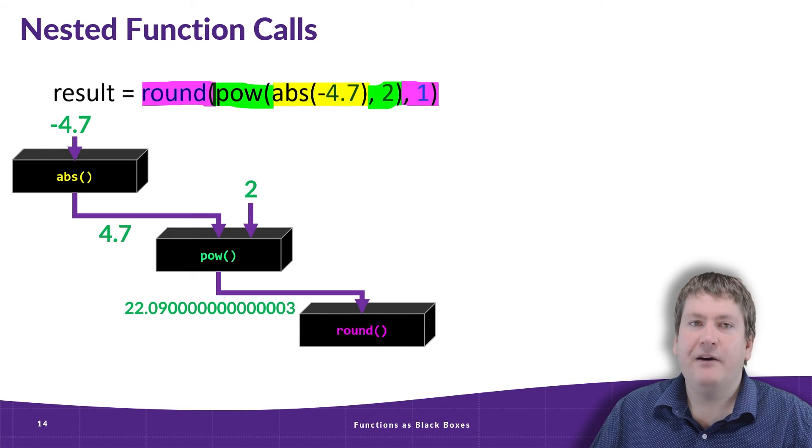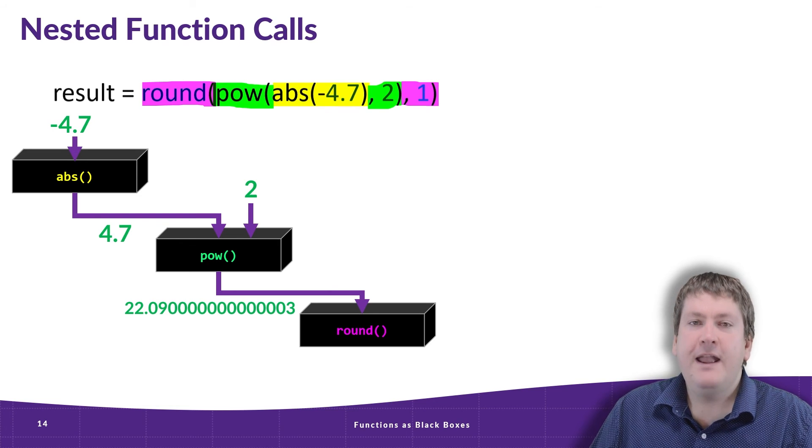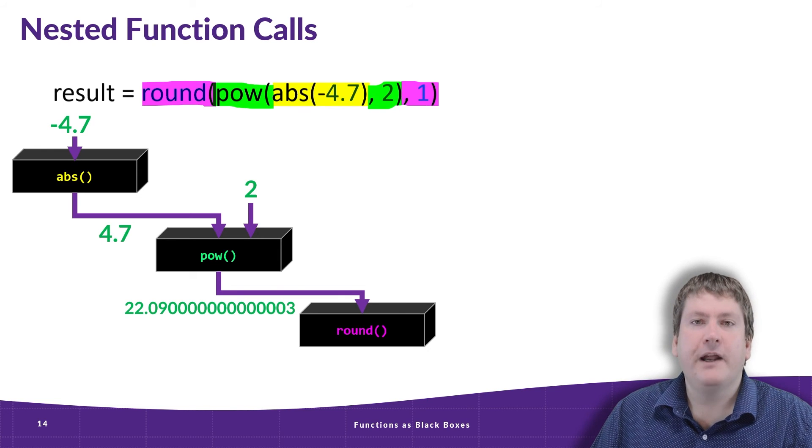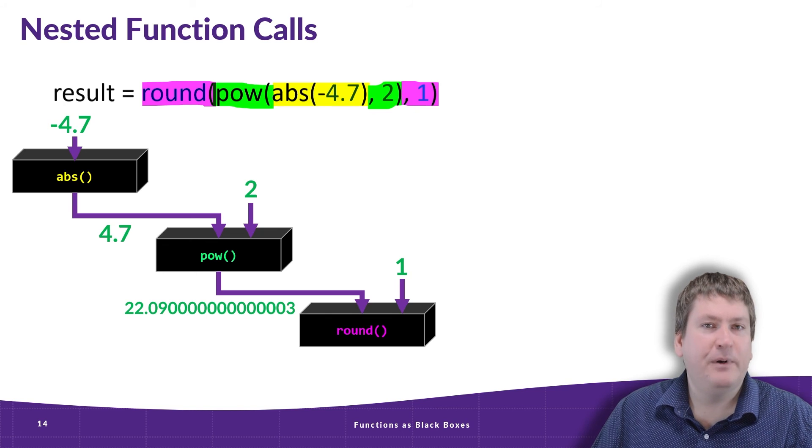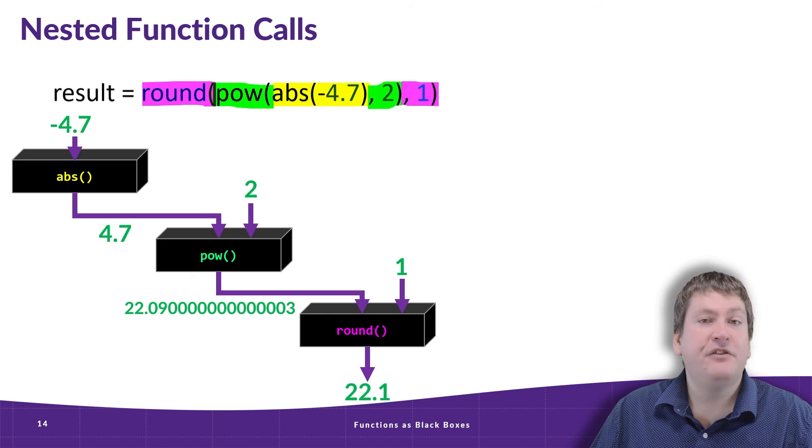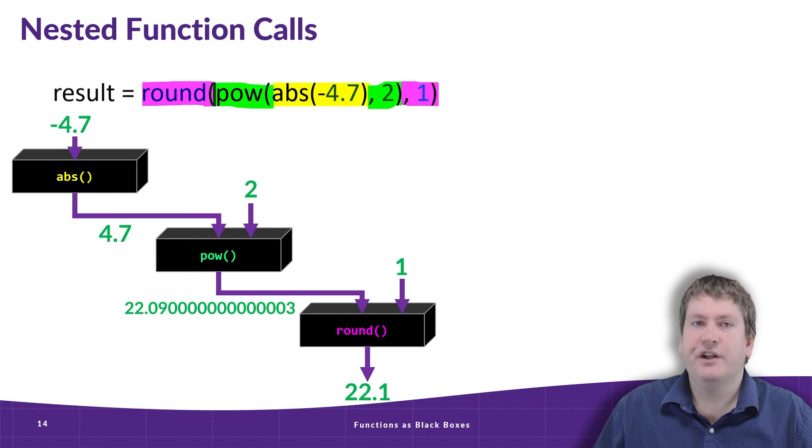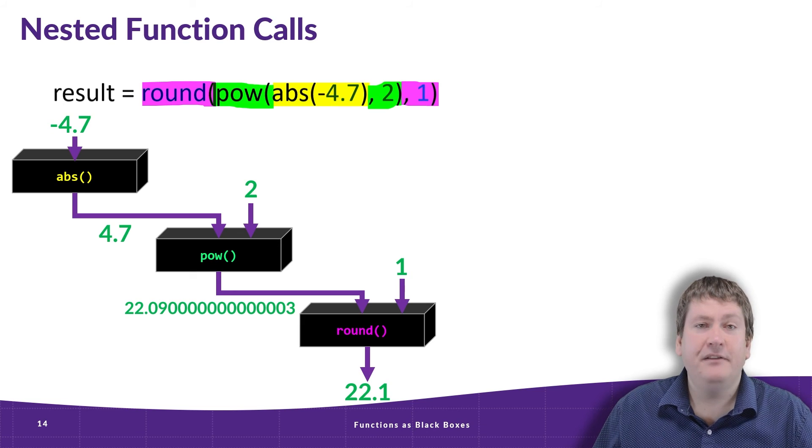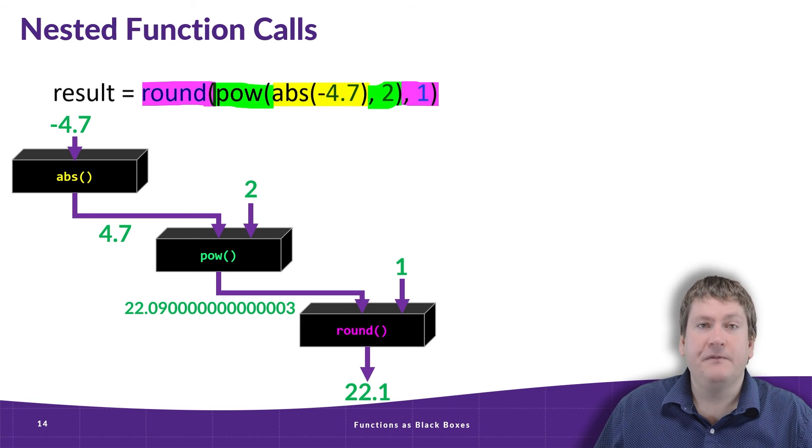So we're taking that output from the pow function, which was equal to 4.7 raised to the power of 2, and we're putting that as input to the round function as the number we have to round. Then we're also inputting a 1 to tell it to round it to one decimal place, and our output is 22.1. Chaining multiple function calls together like this can be extremely powerful, as it allows us to do complex tasks that are more complex and interesting than what each function could do individually.